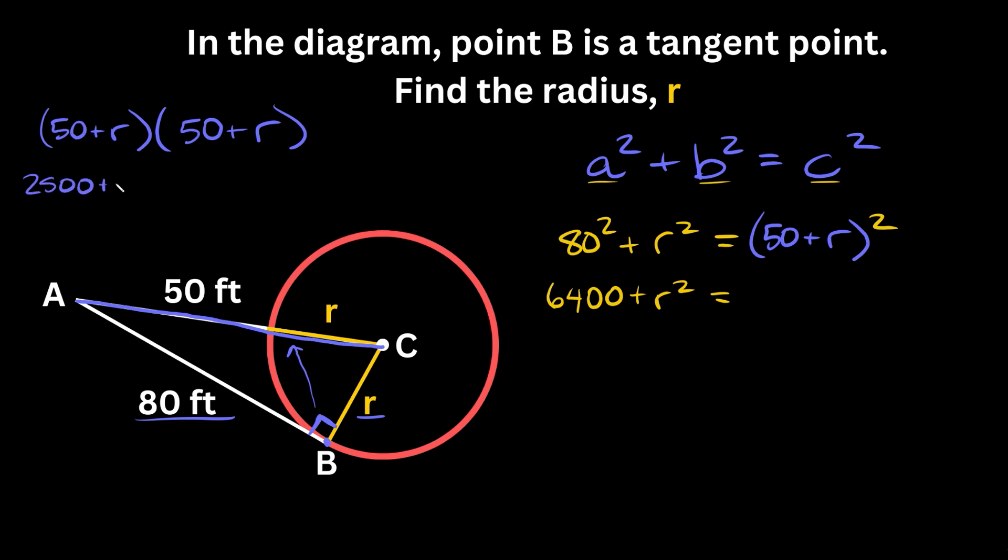50 times R is 50R, and R times R is R². So we have R² + 100R + 2,500. Let's plug this in: R² + 100R + 2,500.